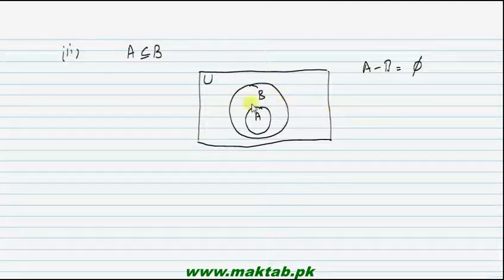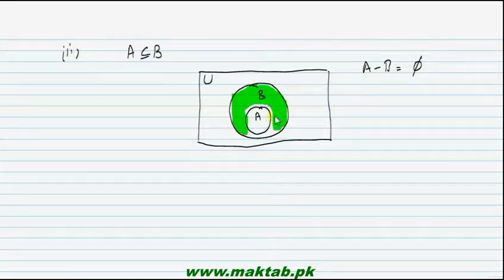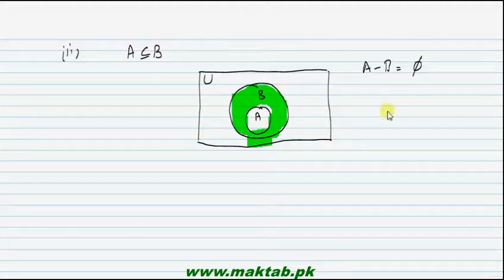Now for B minus A: the region in B that is not in A. I will show this in green color. The entire region of B excluding A becomes B minus A. So B minus A is shown in green color.